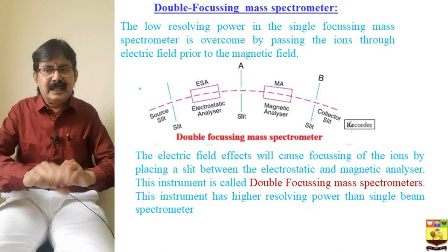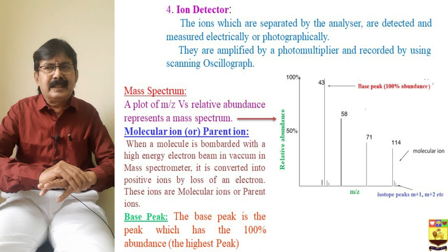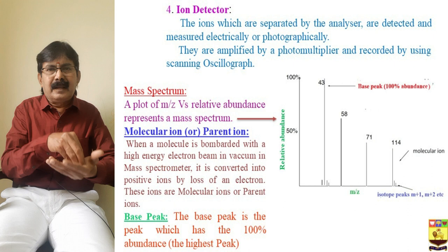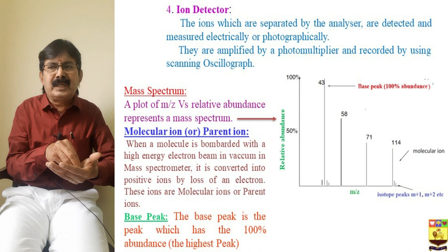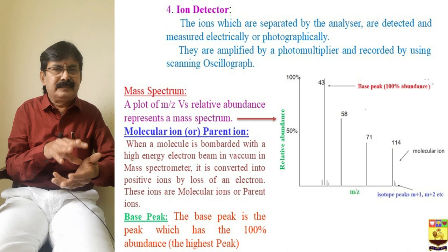The electric field causes focusing of the ions by placing a slit between the electrostatic and the magnetic analyzer. This instrument is called a double focusing mass spectrometer and has higher resolving power than the single beam analyzer. The ion detector detects and measures the ions separated in the magnetic field — either electrically, where the abundance of the molecular ion is directly proportional to the electrical field produced, or photographically. They are amplified by a photomultiplier tube and recorded using a scanning oscillograph.